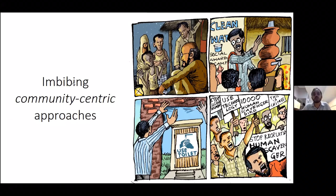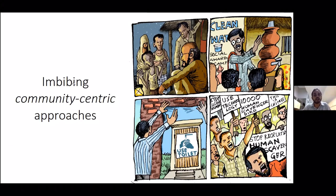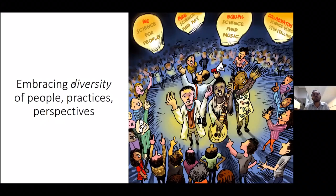Using community-centric approaches and contexts that really affected people's livelihoods enabled genuine engagement with scientific knowledge. These three examples show there is a very rich diversity of people, practices, and perspectives across the world to learn from — examples which are much more long-term and cross-cultural than what we typically learn in science communication courses.